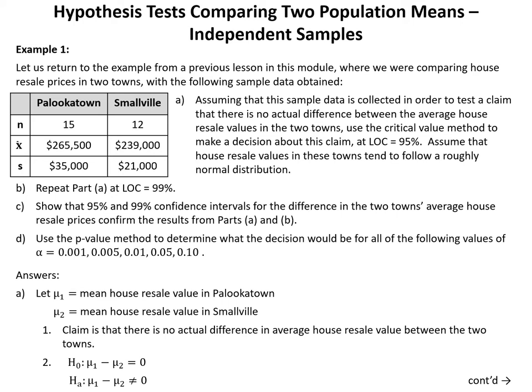To answer this question, we start in Part A by defining the key parameters of interest. We let mu1 equal the mean house resale value in Palookatown and mu2 equal the mean house resale value in Smallville — population parameters we cannot determine with certainty. Step 1: the claim is that there is no actual difference in average house resale value between the two towns, a non-directional claim indicating a two-tail test. Step 2: H0 is that mu1 minus mu2 equals zero, and HA is that mu1 minus mu2 is not equal to zero.